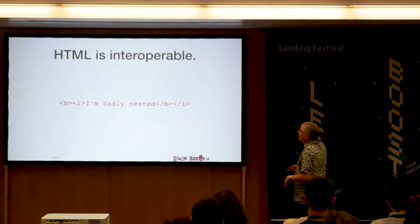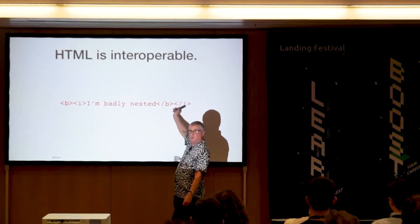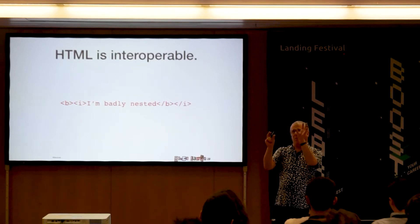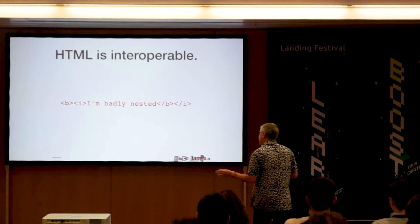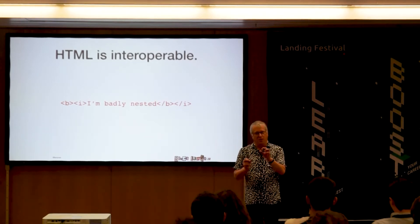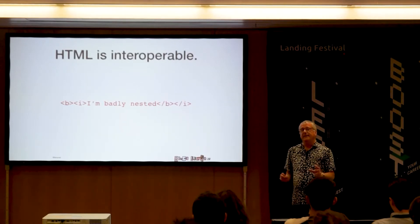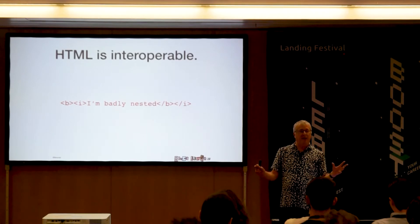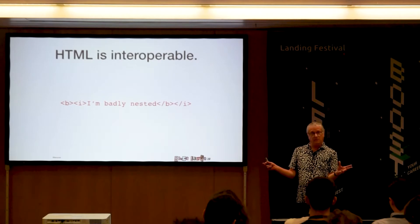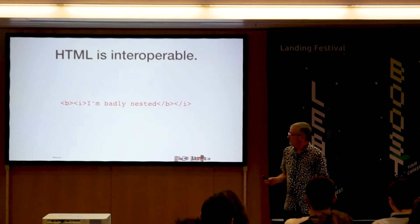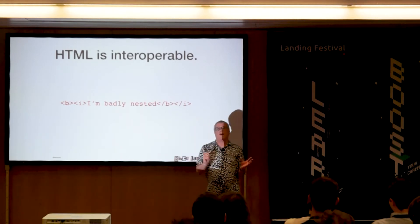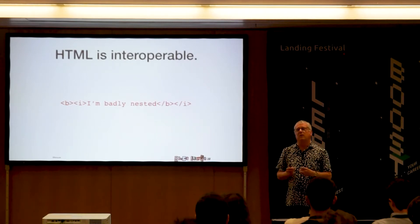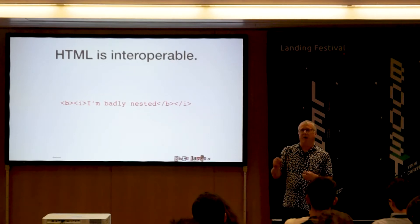HTML is interoperable. Here I'm opening a B, opening an I, and closing the B before the I. Before HTML5, in IE, Safari and Firefox the B and the I would be next to each other in the DOM. In Chrome and Opera, the I would be underneath the B in the document object model. Nobody was wrong because HTML4 only told you what to do with valid code. The trouble was: if different browsers were showing different DOMs, writing scripts that looked at the DOM was really brittle, really time-consuming, and you didn't get to go to the pub at five o'clock on a Friday night.